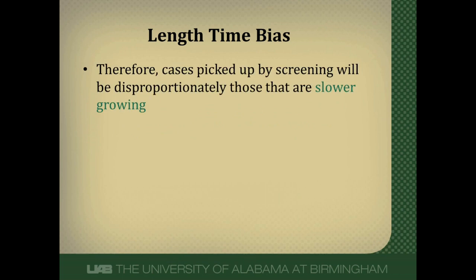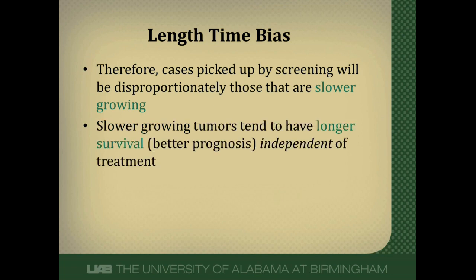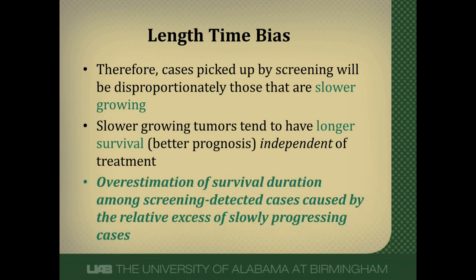So cases picked up by screening will be disproportionately those that are slower growing, and slower growing tumors tend to have a longer survival and a better prognosis independent of how good or bad treatment is. The result of length-time bias is an overestimation of survival duration among screen-detected cases caused by this excess of slowly progressing cases, and that's what length-time bias is.